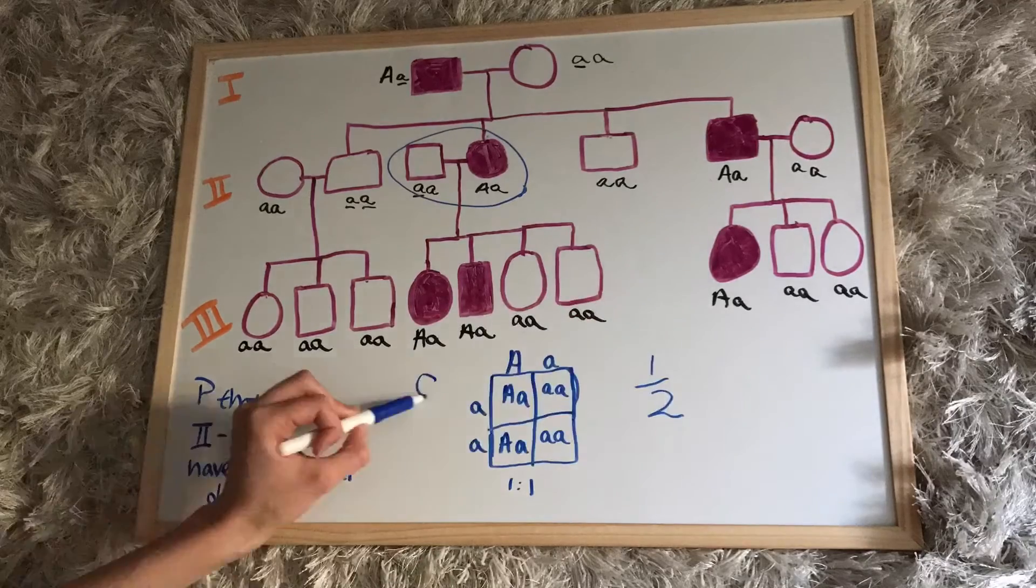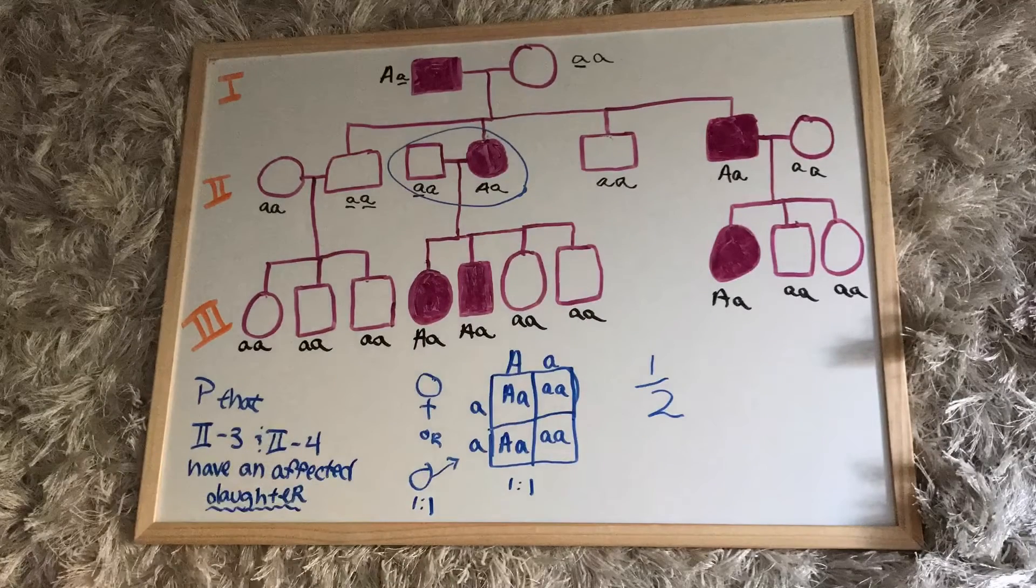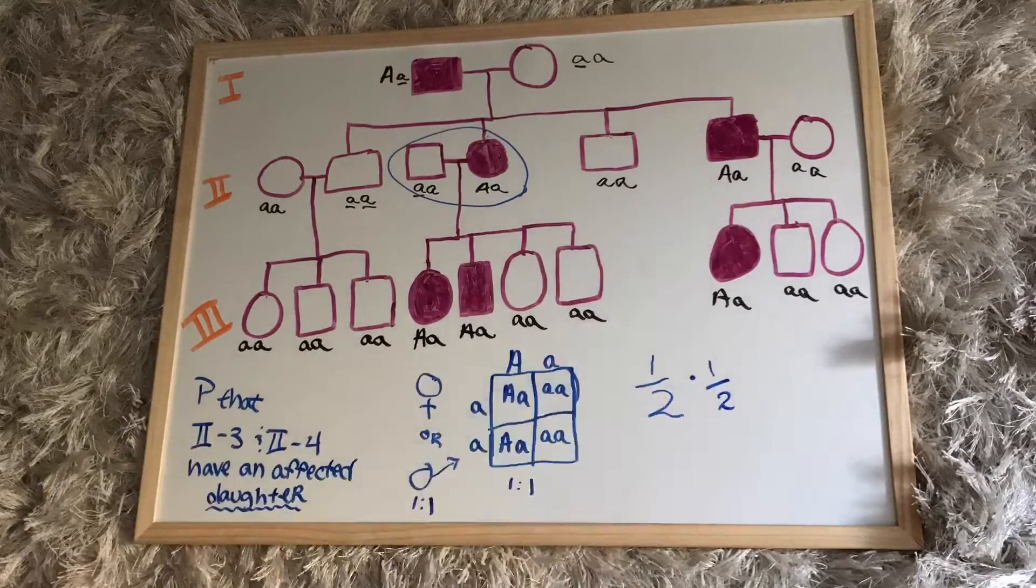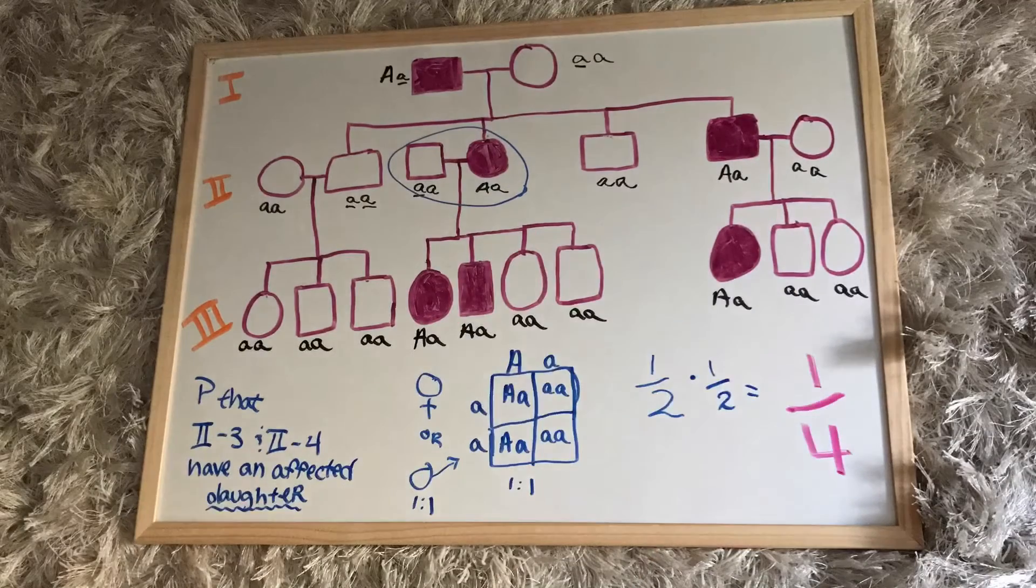With that we see that the genotypes are in a one-to-one ratio, so our first part is one half. The second part, we compare male and female. Since those are also in a one-to-one ratio, we multiply the first half by the second half to get an answer of one-fourth.